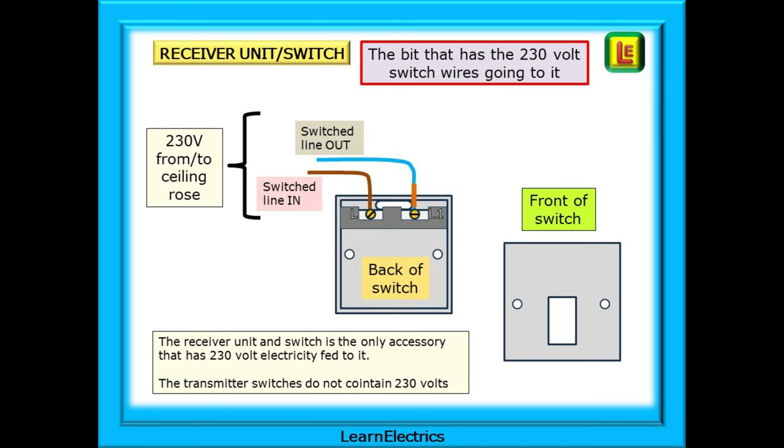We are not using these wires to power the switch. The switch part of the accessory will produce its own electricity to operate a relay device. The receiver switch unit will often need a 25 millimeter back box. The way the switch works cannot be squeezed into a standard 50 millimeter back box for lights. The receiver unit or receiver and switch are the only accessories that have 230 volt electricity fed to them. The transmitter switches do not contain 230 volts.